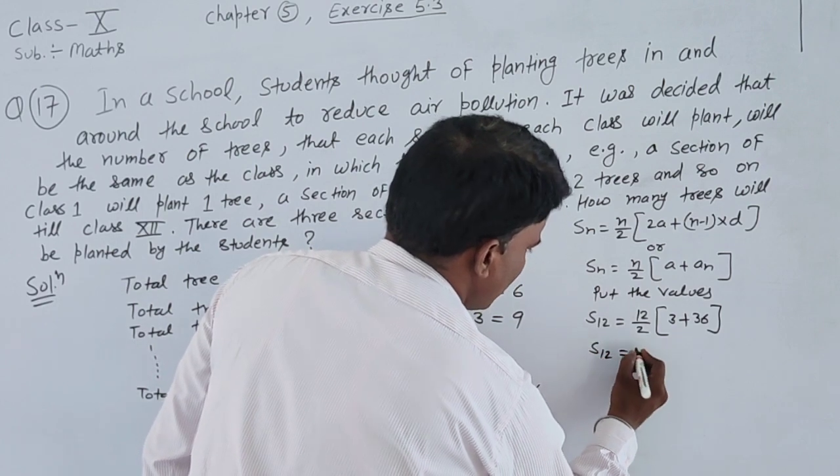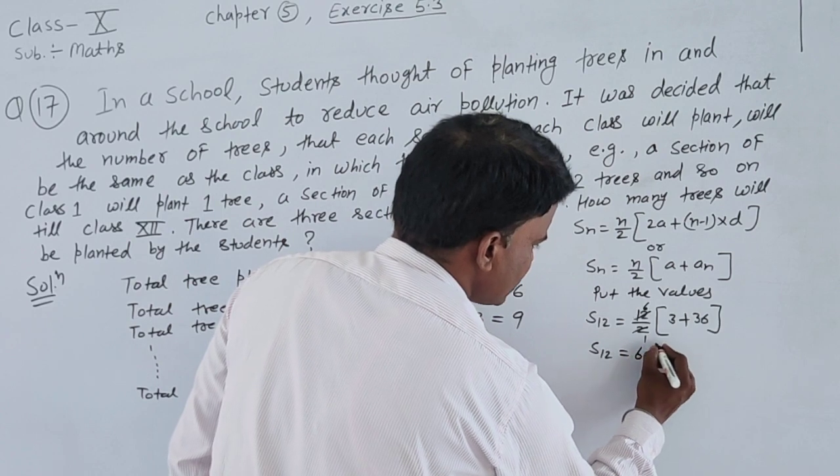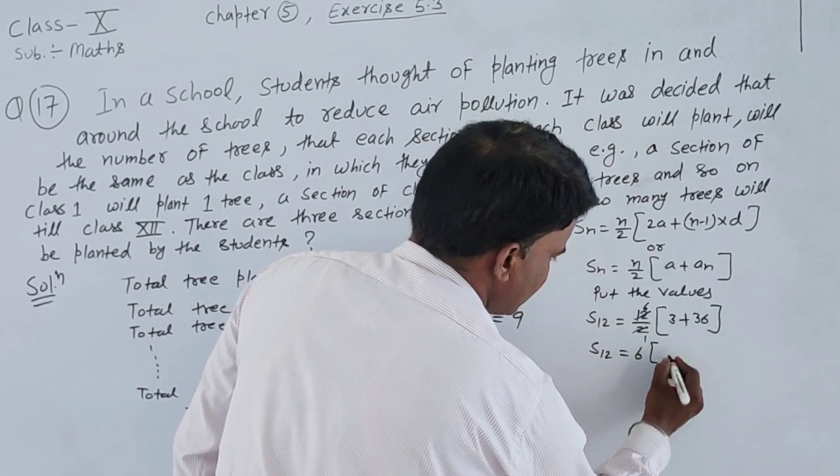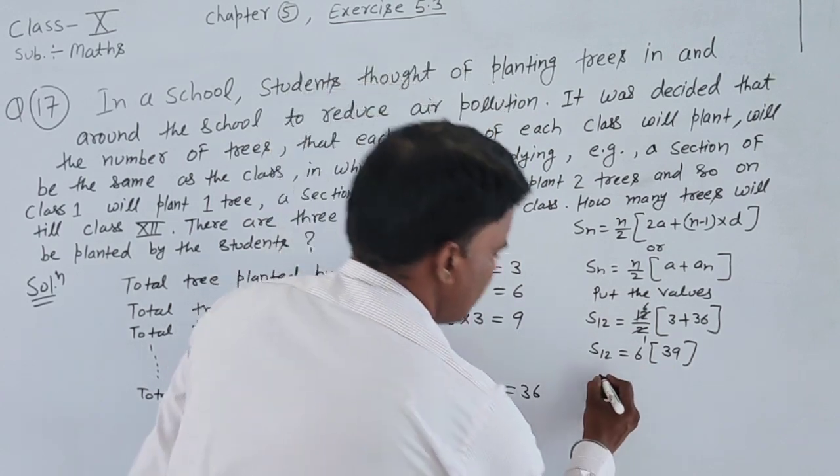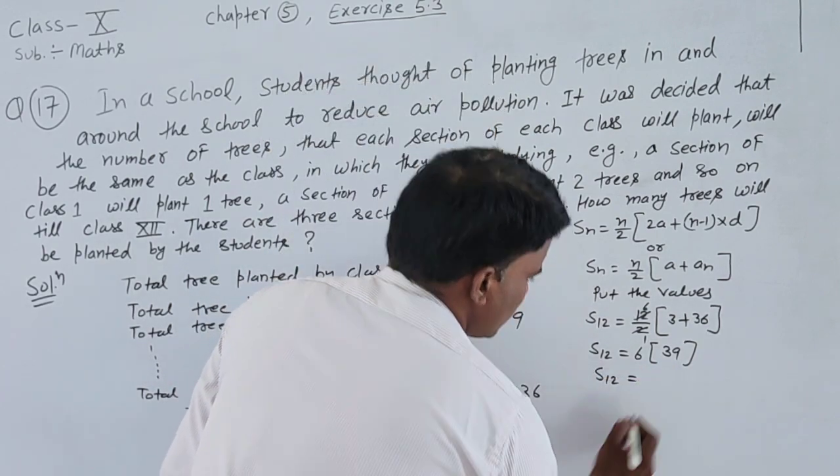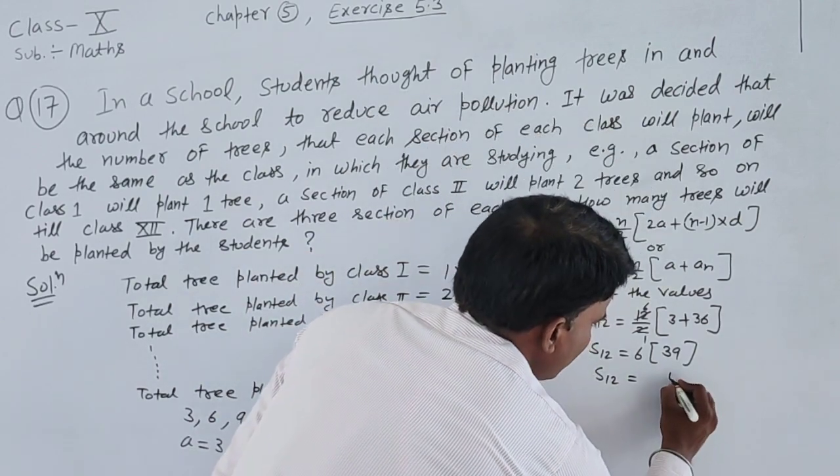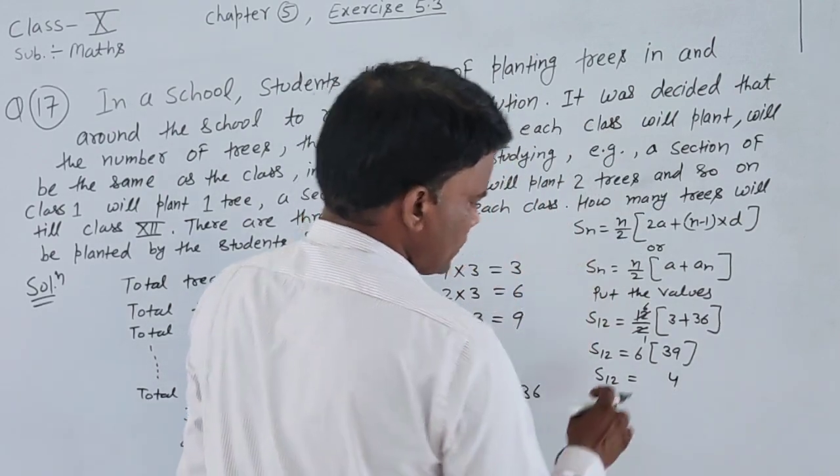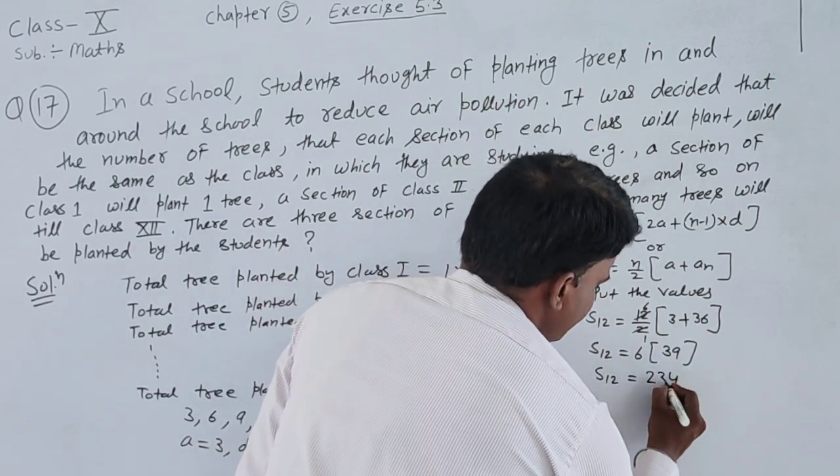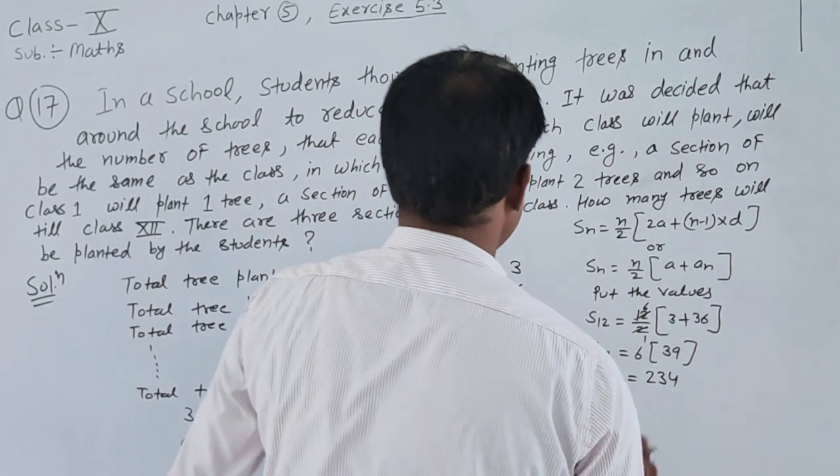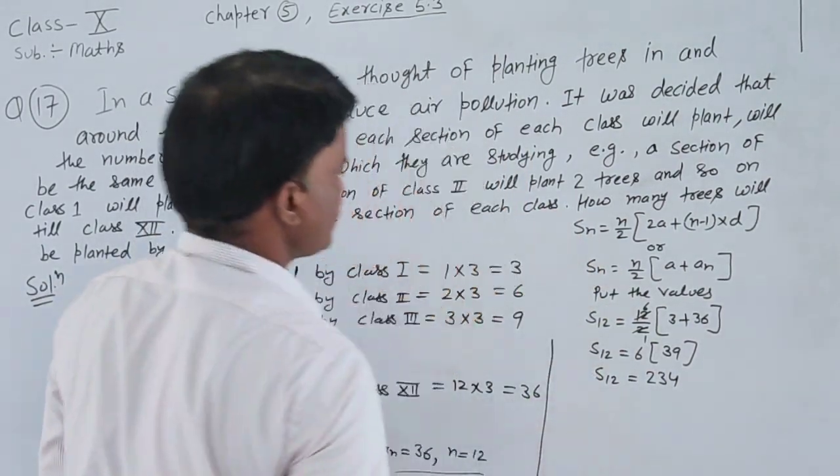S_12 equals 12 by 2 times (3 plus 36). Simplifying, 12 divided by 2 equals 6, and 36 plus 3 equals 39. So 39 times 6, multiplying: 9 times 6 is 54, write 4 carry 5, 6 times 3 is 18, 18 plus 5 is 23, equals 234.